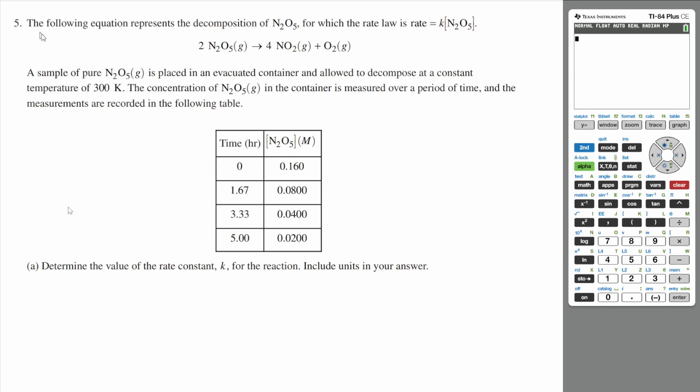All right, let's do question 5. The following equation represents the decomposition of N2O5 for which the rate law is rate equals k times the concentration of N2O5. A sample of pure N2O5 is placed in an evacuated container and allowed to decompose at a constant temperature of 300 Kelvin. The concentration of N2O5 in the container is measured over a period of time and the measurements are recorded in the following table.